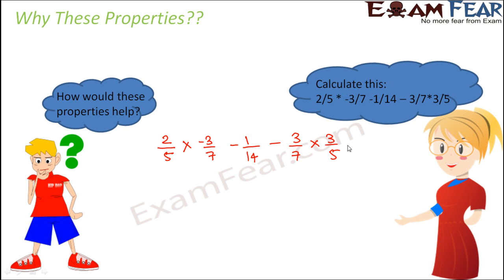Now normally how would you solve it? You would first multiply these two, then also you will multiply these two and then you will add or subtract the respective terms. So let's try to do this. So this would be minus 6 by 35 minus 1 by 14 minus 9 by 35.